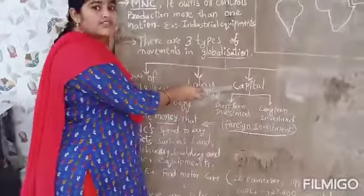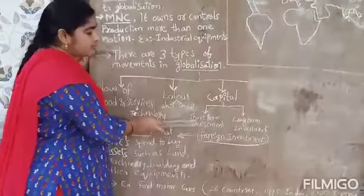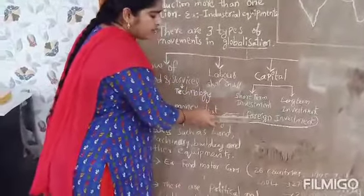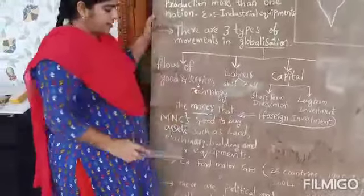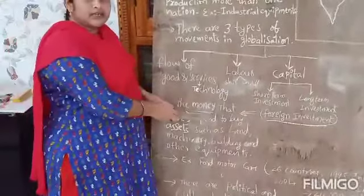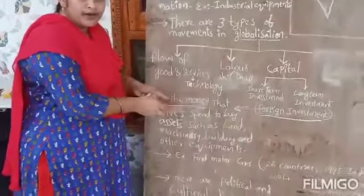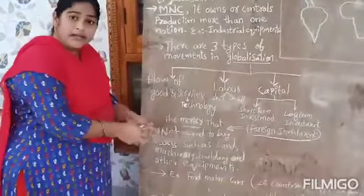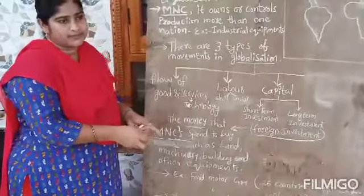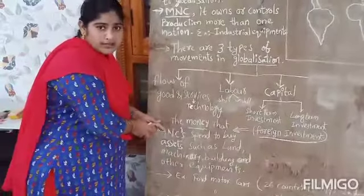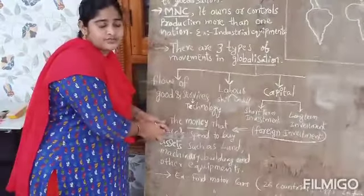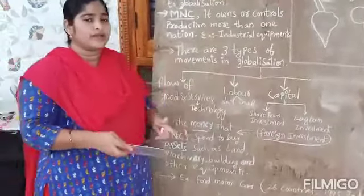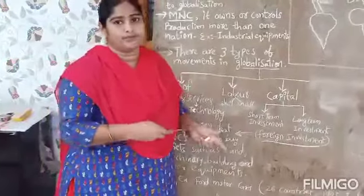Next is capital, also called as investment. There are short-term investments and long-term investments. There is investment called foreign investment. Foreign investment means the money that an MNC spends to buy assets such as land, building, machinery, and other equipment. The main intention of the MNC is to spend money on such assets that they hope will give them more profit.